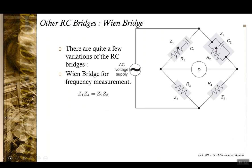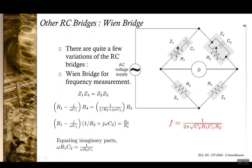Another application of RC bridge circuits is the Wien bridge, which is generally used for frequency measurement. At balance, the real part becomes independent of frequency, and from the imaginary part an expression for frequency in terms of the bridge elements is obtained, allowing determination of the supply frequency.